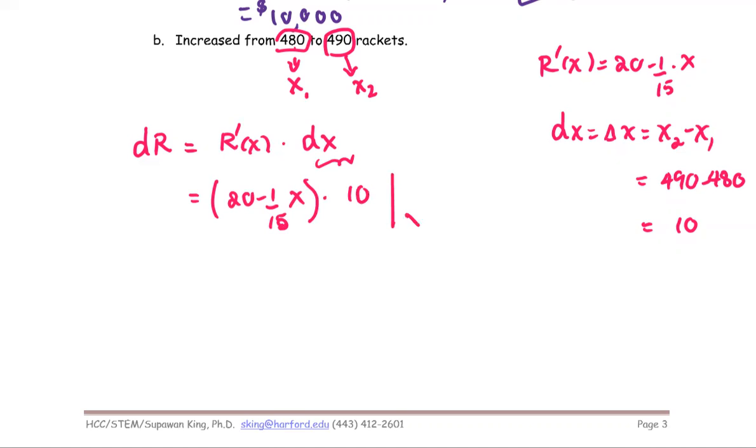The R prime: 20 minus 1 over 15 multiplied by x times the dx, which is 10, evaluate at the first x, which is 480 for part B. And then multiply by 10. We get 20 minus, and these two numbers reduce to be 32.